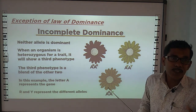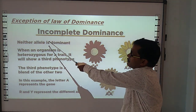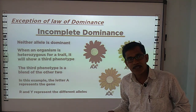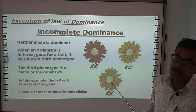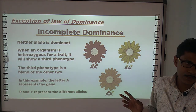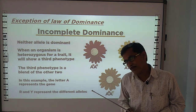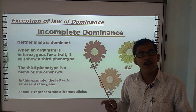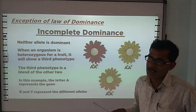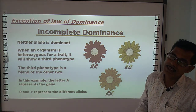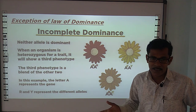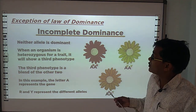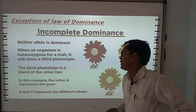In the case of incomplete dominance — as the name indicates — the character is neither fully dominant nor recessive. When you cross between the dominant and recessive, in the F1 generation, neither the recessive nor the dominant character is expressed. Instead, intermediate traits are seen in the F1 generation, showing an intermediate character. This is what we call incomplete dominance.